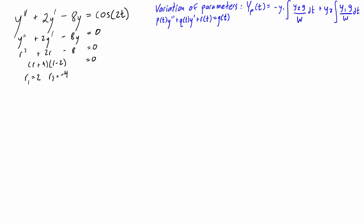Because we have two real distinct roots, the complementary solution is written as c₁e^(2t) + c₂e^(−4t). We can see this is of the form c₁y₁ + c₂y₂, so y₁ = e^(2t) and y₂ = e^(−4t).